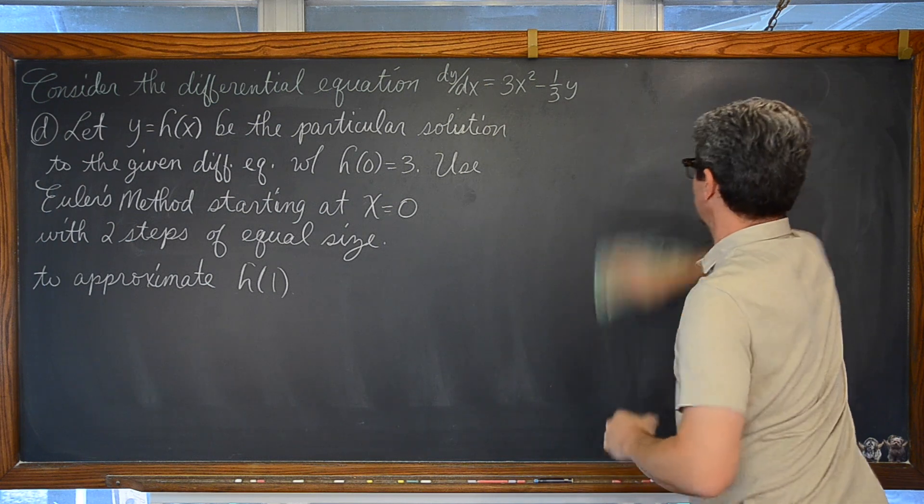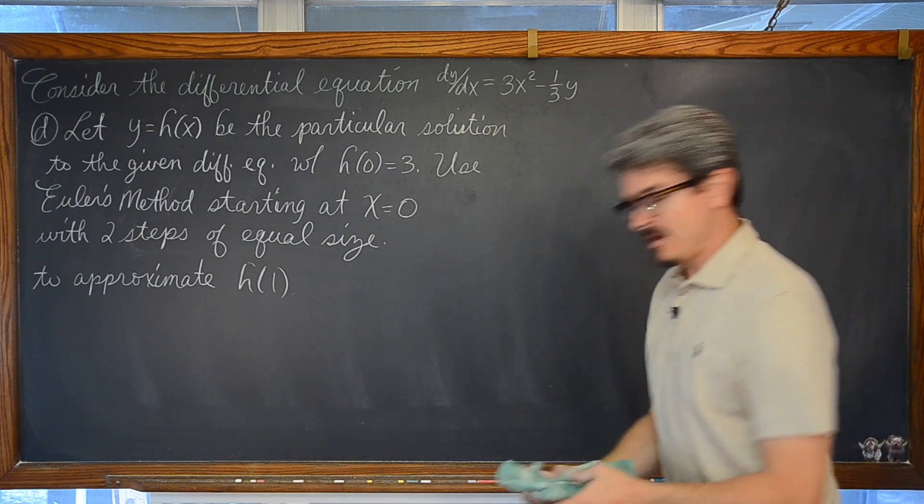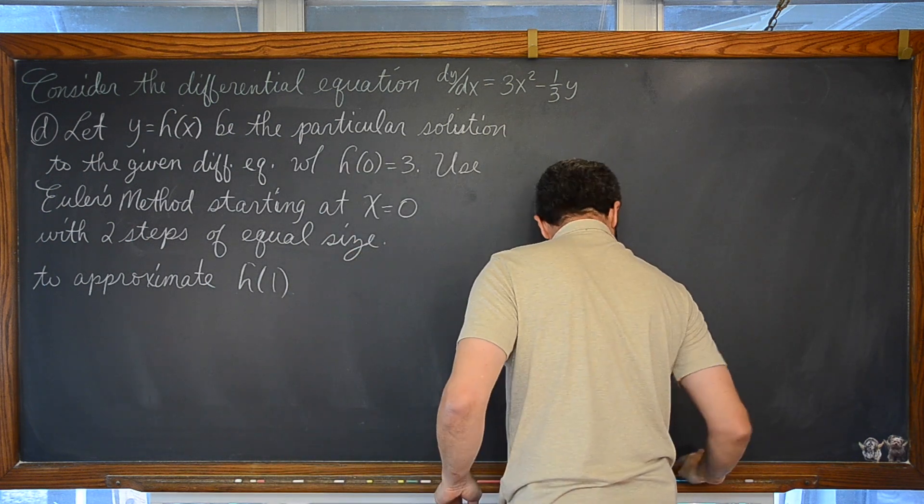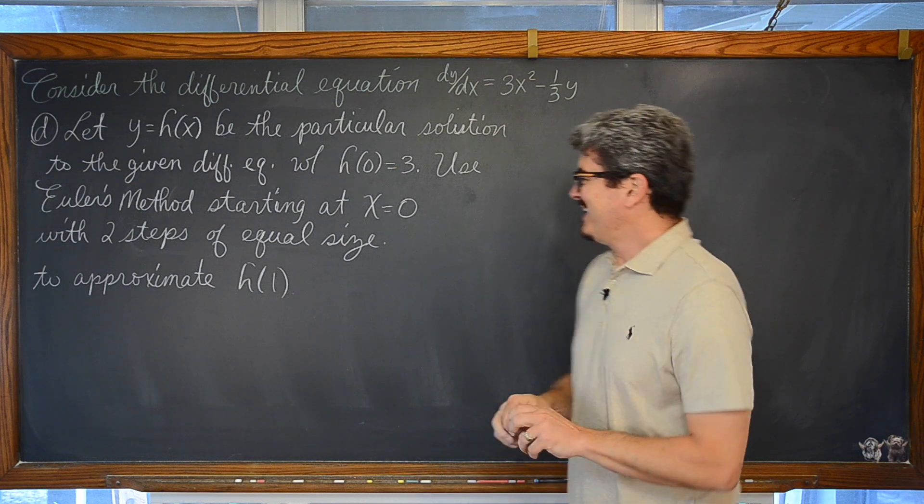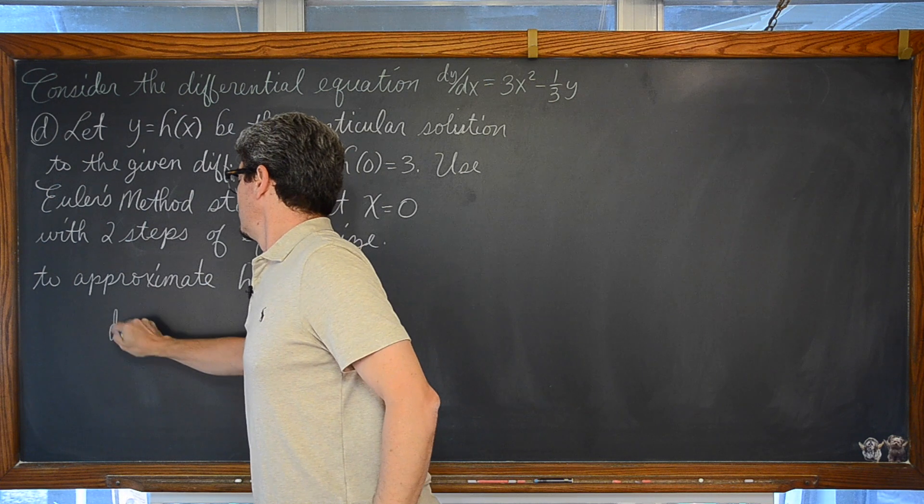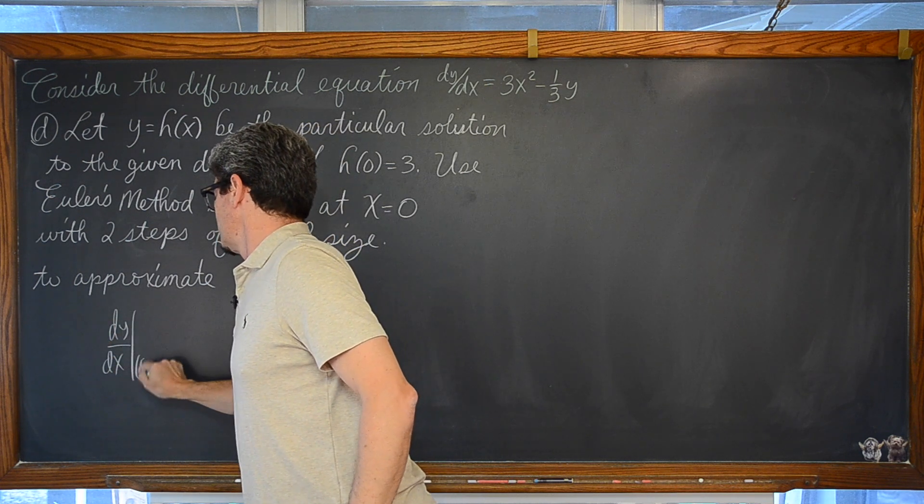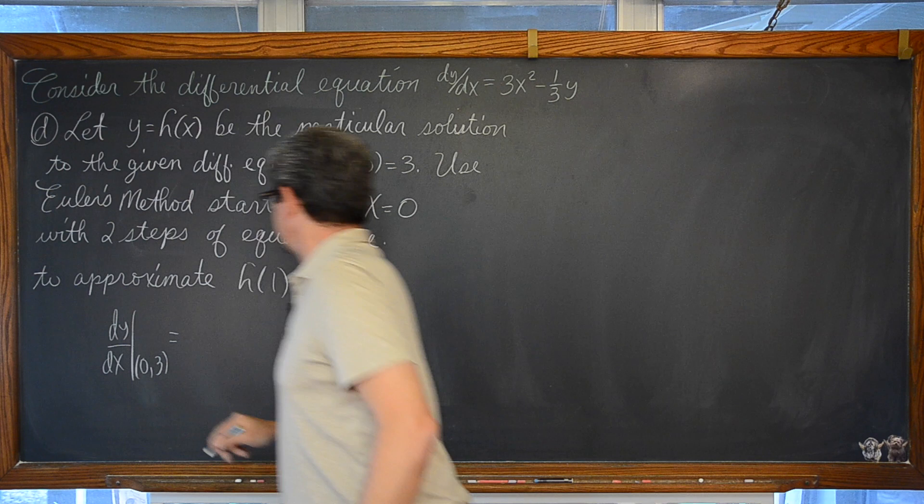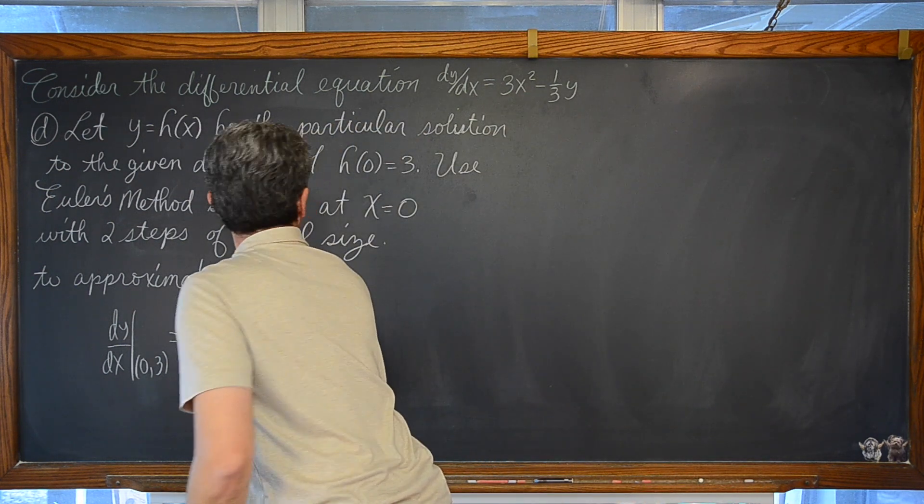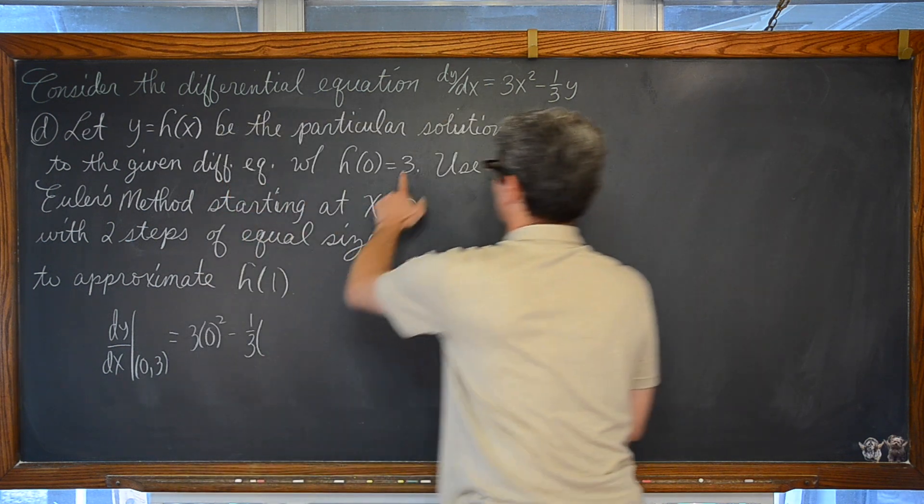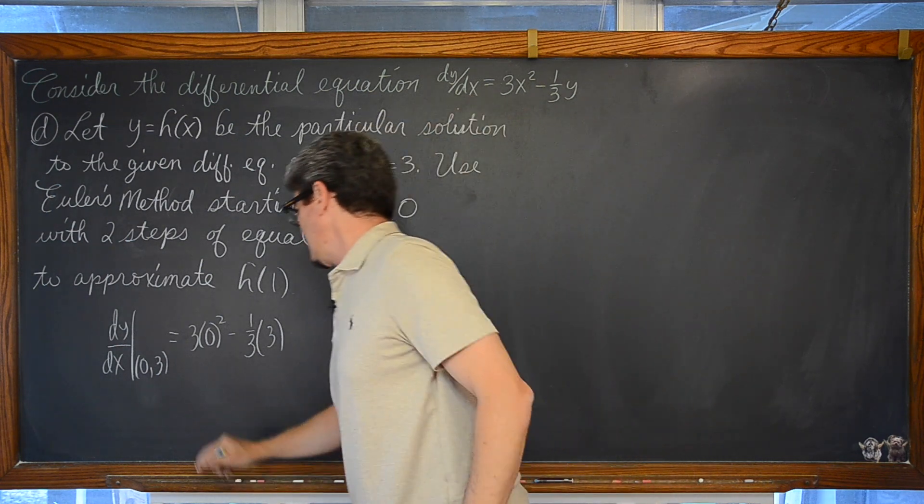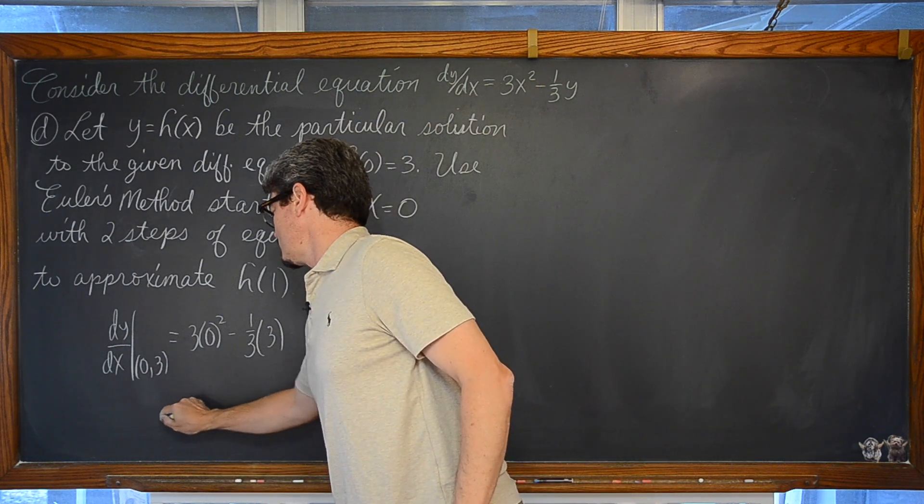So at the point of (0,3), what is our slope? dy/dx at (0,3) is equal to 3 times 0 minus 1/3 our y coordinate. And this first part was made out to be relatively neat. We have our slope is equal to negative 1.